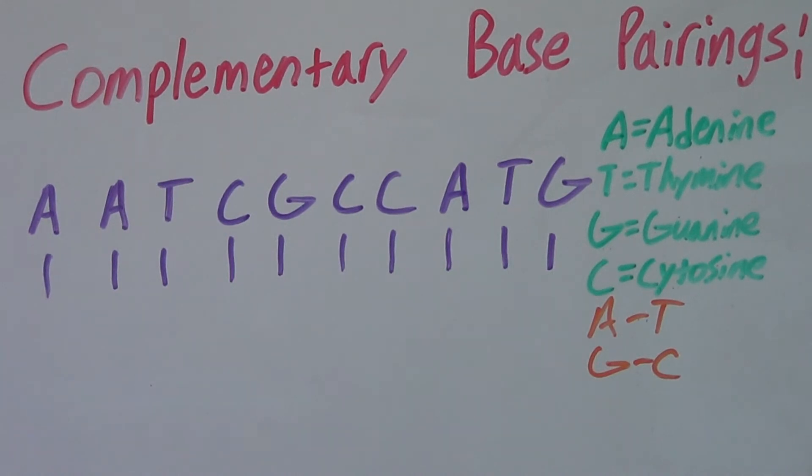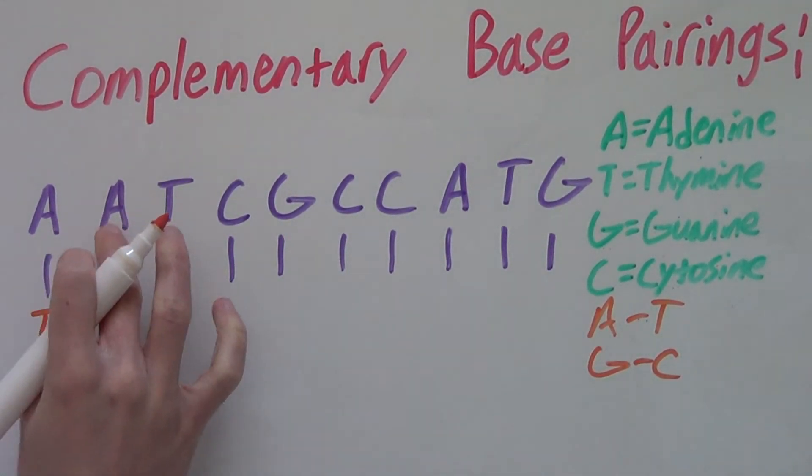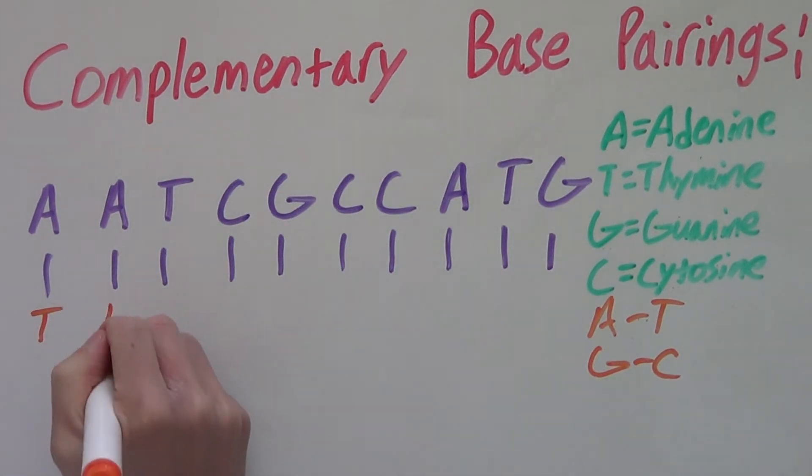Our first base is A. A pairs with T, so all you need to do is write a T under it. Our next base is also A, so again, it's a T.